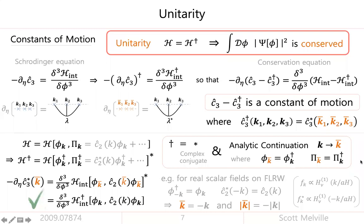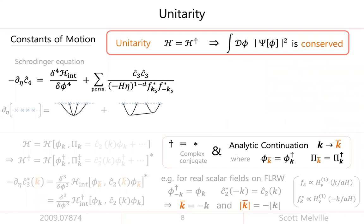This story for the bispectrum works for C4 and higher order wave function coefficients too. For the trispectrum C4, the Schrödinger equation now has not just the interaction term but also an exchange term.